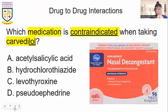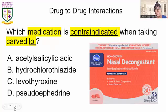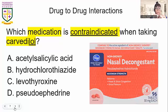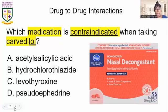The next one is drug-to-drug interaction — how one drug affects the next drug. It says what is a contraindication. If something is contraindicated, that means it's going against, fighting against. Carvedilol is used to treat blood pressure. Sudafedrine is used to treat nasal decongestion. If a person is taking blood pressure medication, they should not be taking sudafedrine because it increases the heart rate. The answer is letter D. If a person has high blood pressure, they should not be taking any type of nasal decongestant.